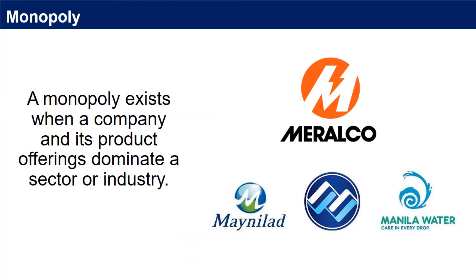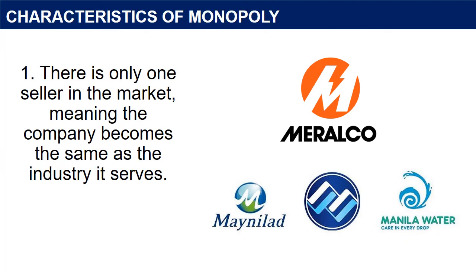8. A monopoly exists when a company and its product offerings dominate a sector or industry. The existence of a monopoly depends on how easy it is for consumers to substitute the products for those of other sellers. Characteristics of monopoly: 1. There is only one seller in the market, meaning the company becomes the same as the industry it serves. A single seller has control of the entire supply of raw materials like Maynilad, Manila Water, and Meralco.